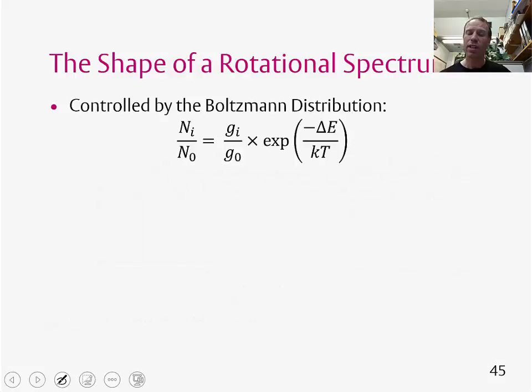Well, we know that the transition intensity is going to be governed by the selection rules, we've already considered those. It's going to be affected by the Beer-Lambert law, which we're not going to worry about in this case here. And it's also going to be affected by the Boltzmann distribution, and this is to do with the population of the various energy levels. So this is the expression we saw in an earlier topic, which gives us the relative populations of various energy levels as a function of temperature.